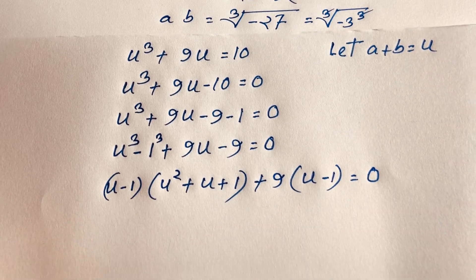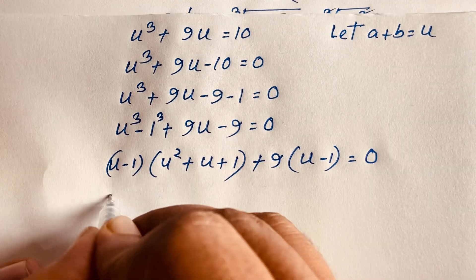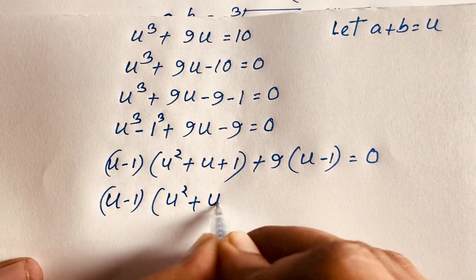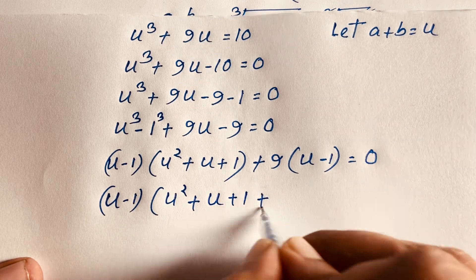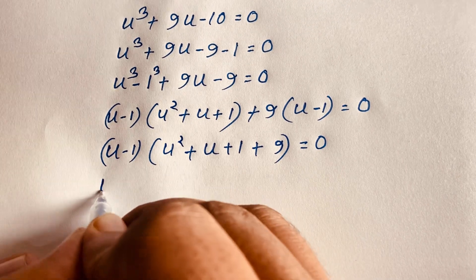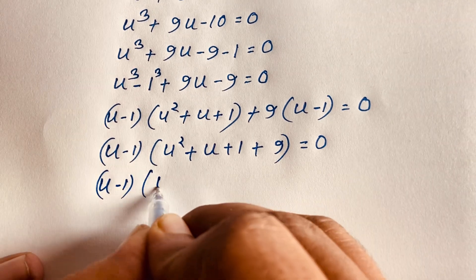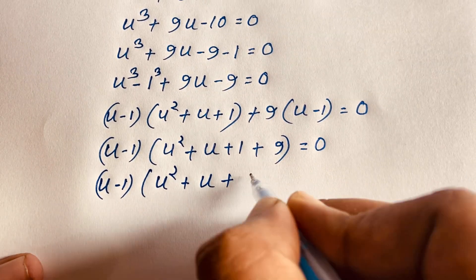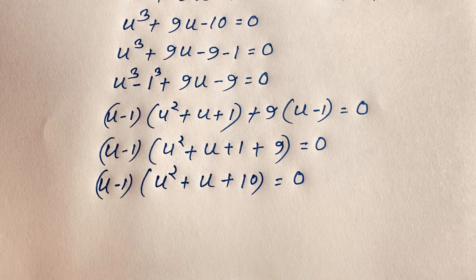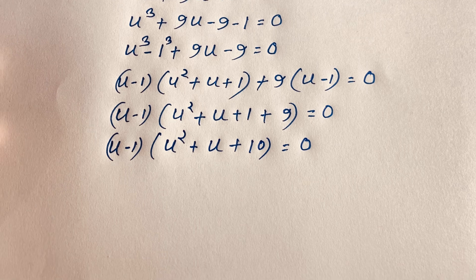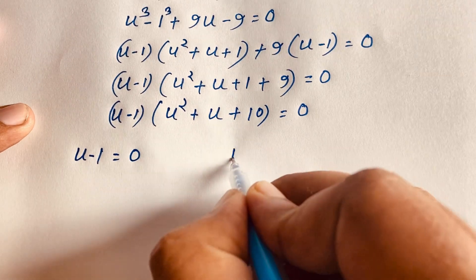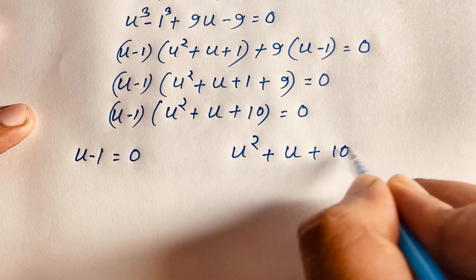Applying the difference of cubes: u³ minus 1 equals (u minus 1)(u² plus u plus 1). So factoring out (u minus 1): (u minus 1)(u² plus u plus 1 plus 9) equals 0, which gives (u minus 1)(u² plus u plus 10) equals 0. So we have two cases: u minus 1 equals 0, or u² plus u plus 10 equals 0.